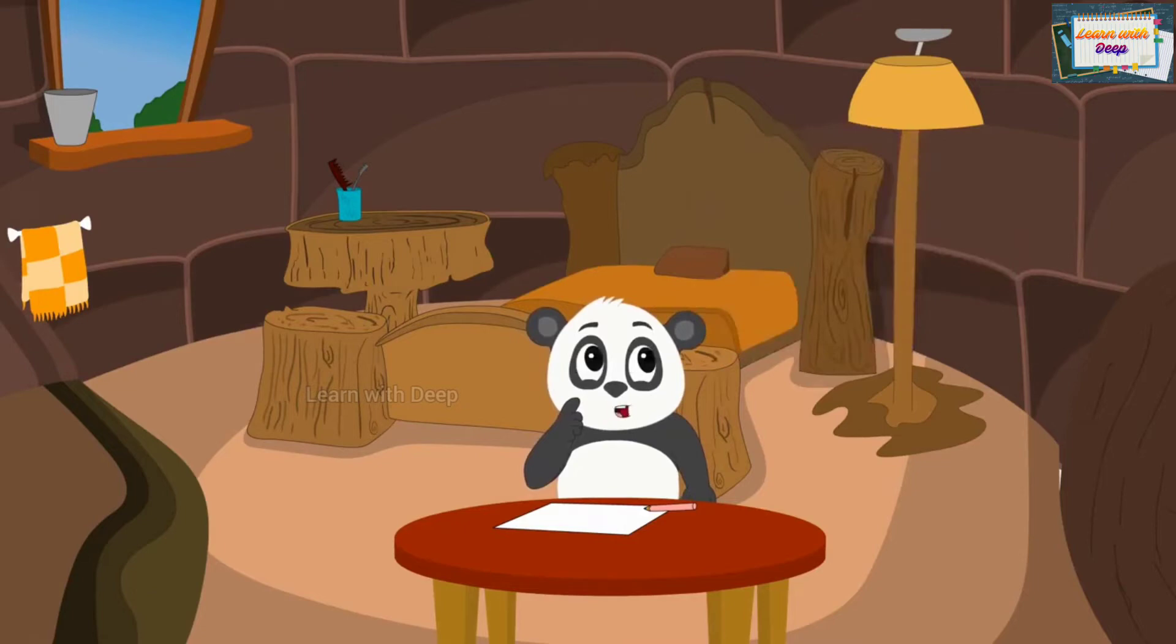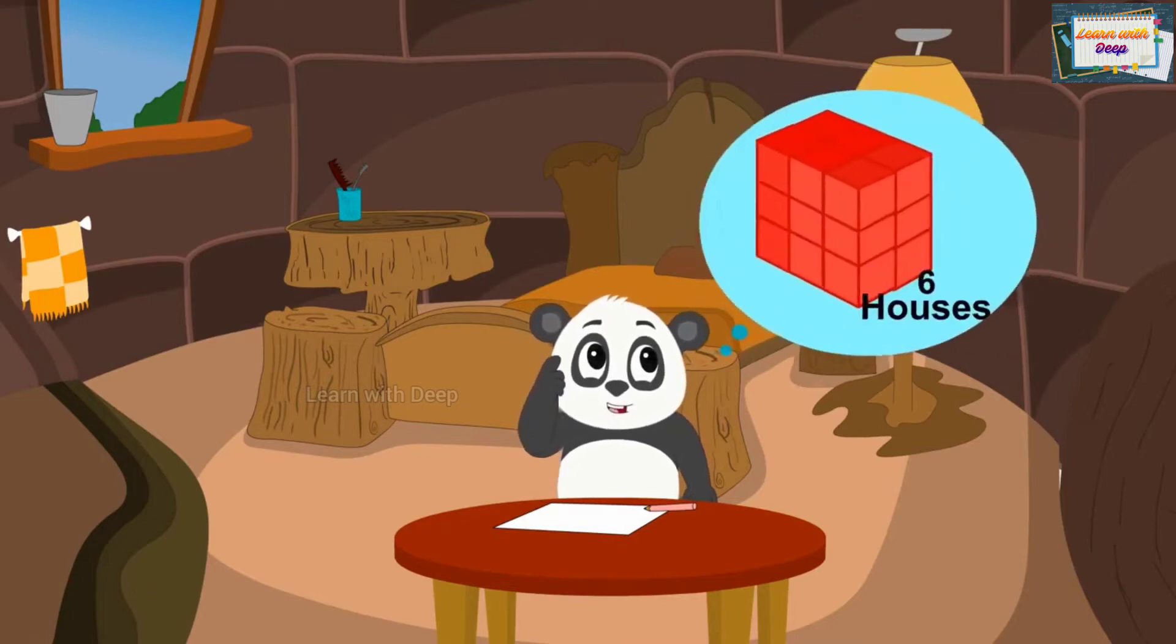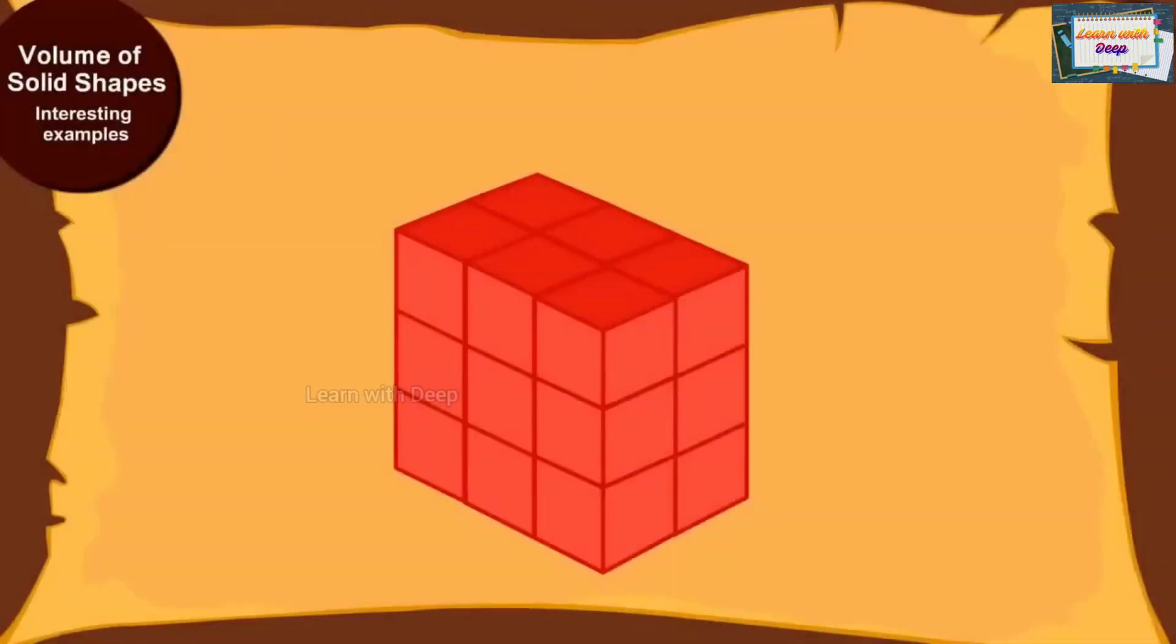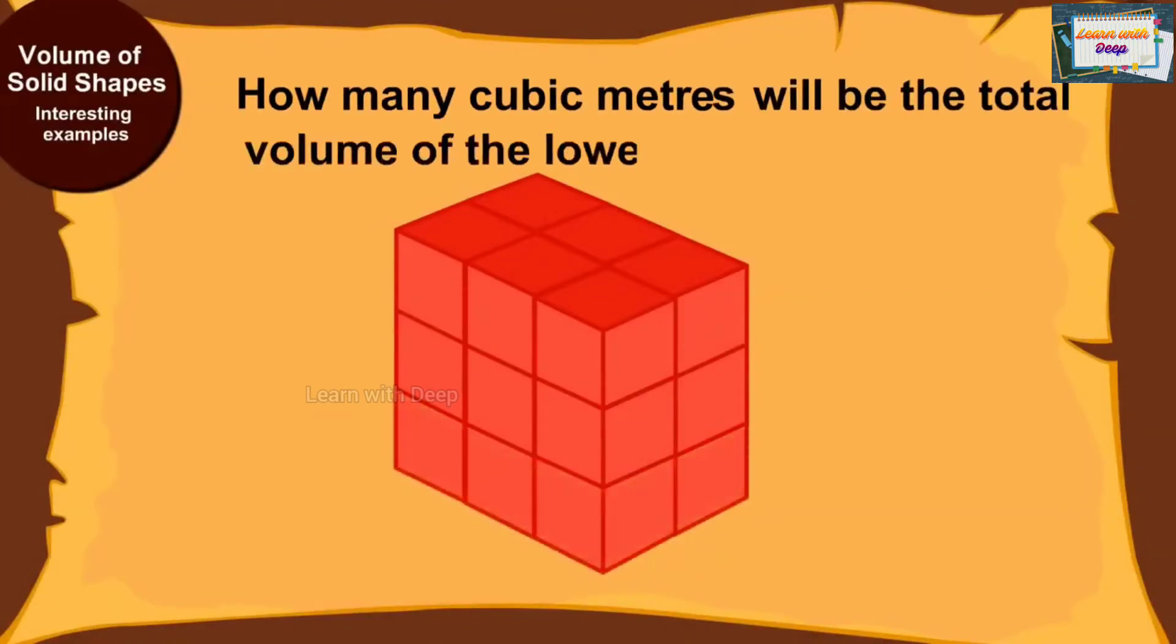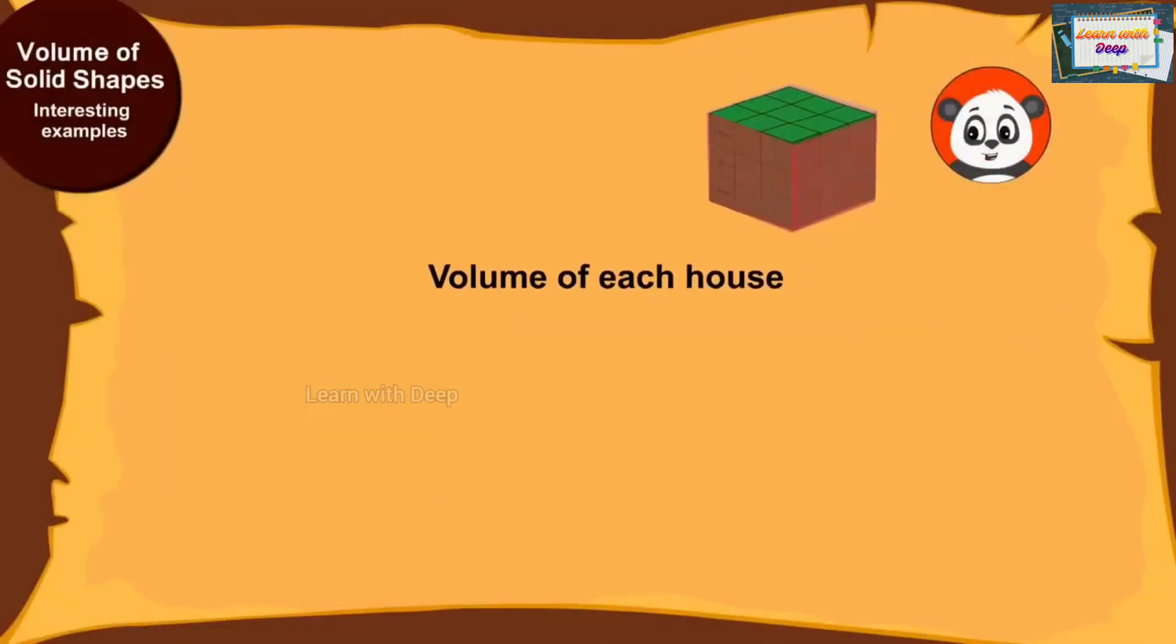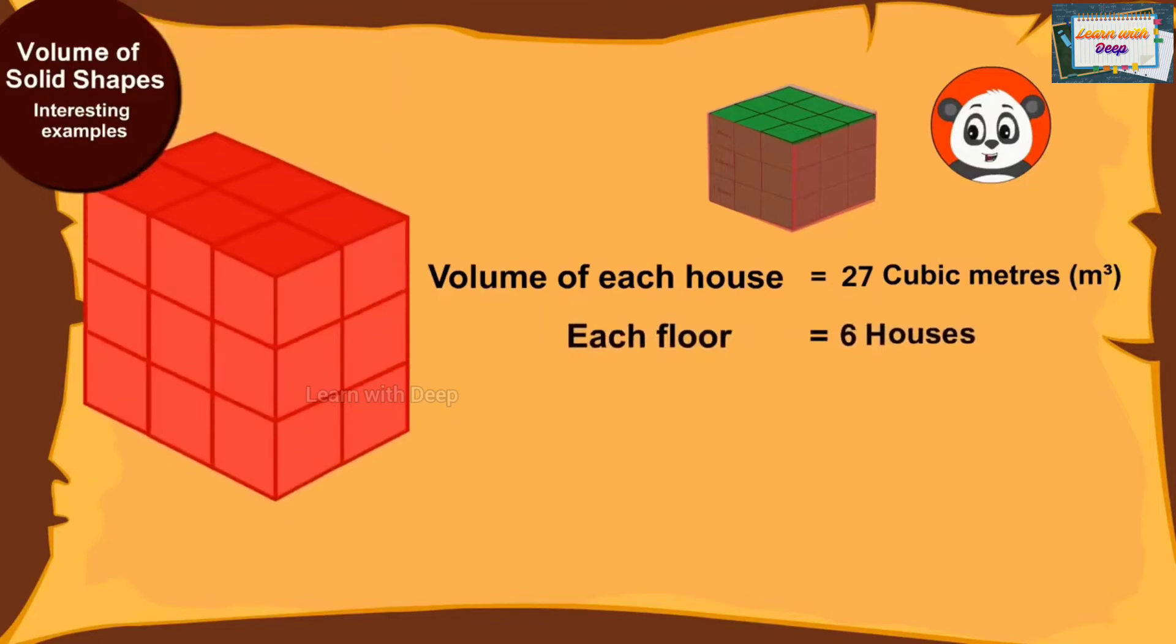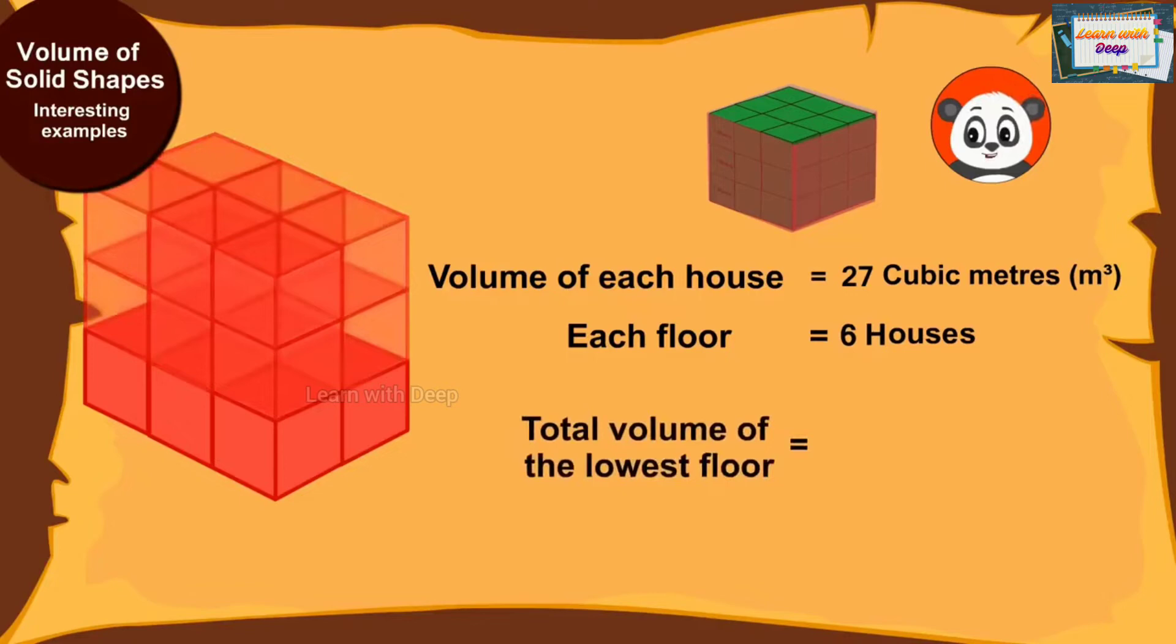If I build 6 houses on each floor of the building, how many cubic meters will be the total volume of the lowest floor? The volume of each house is equal to 27 cubic meters, and there are 6 such houses on each floor. This means the total volume of the lowest floor will be 6 times 27, that is, 162 cubic meters.